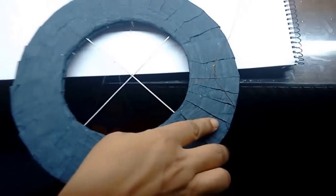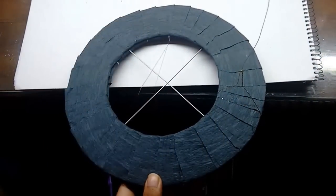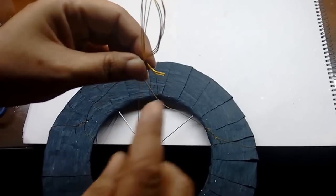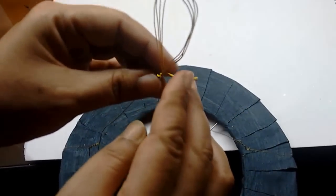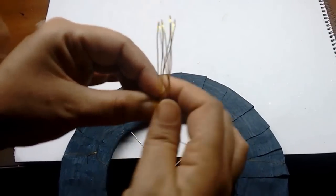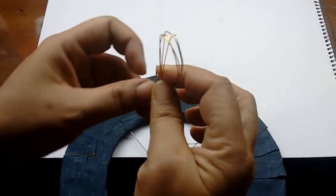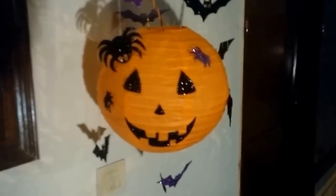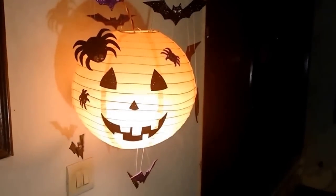Now just bring all the four wires together and make a loop like this. And then twist the end. And you can hang it anywhere from this loop. And this is how the chandelier would look with the bats and the spiders. Thank you.